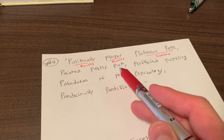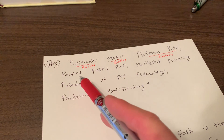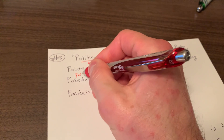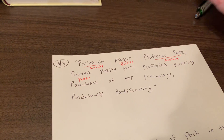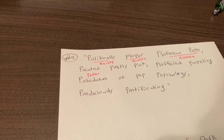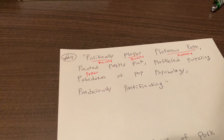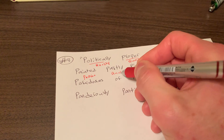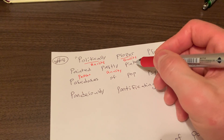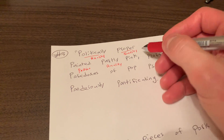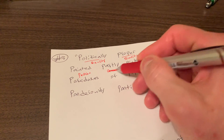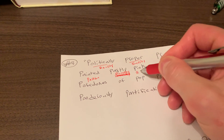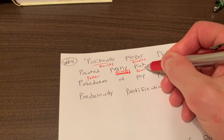'Painted' — he was painted, he underwent something, so that is a passion. 'Partly' — that's a quantity. 'Pink' — that's a quality.